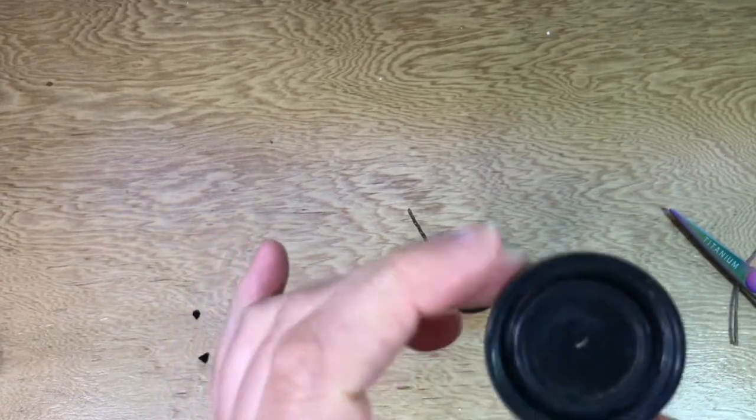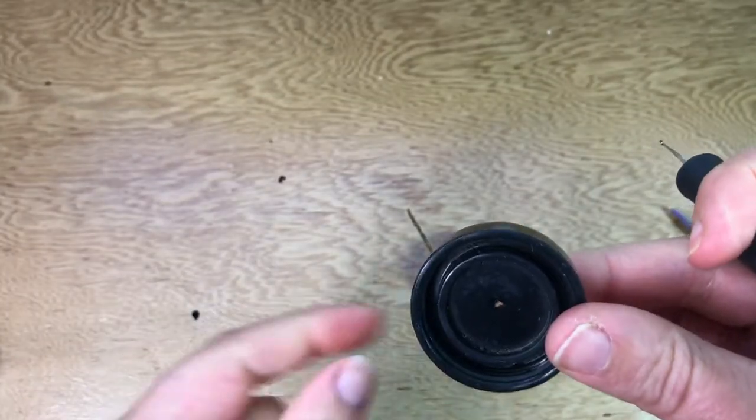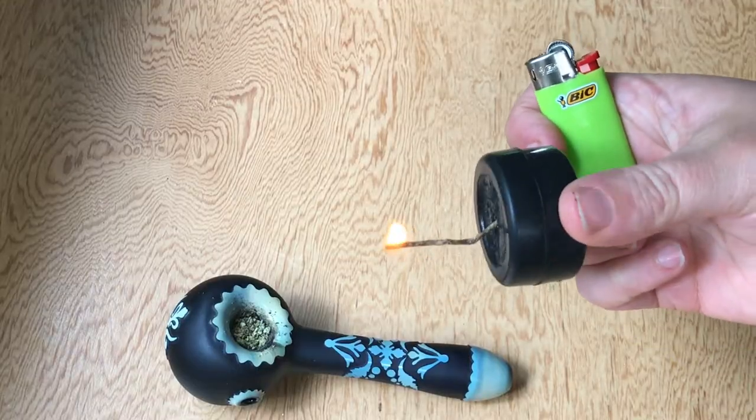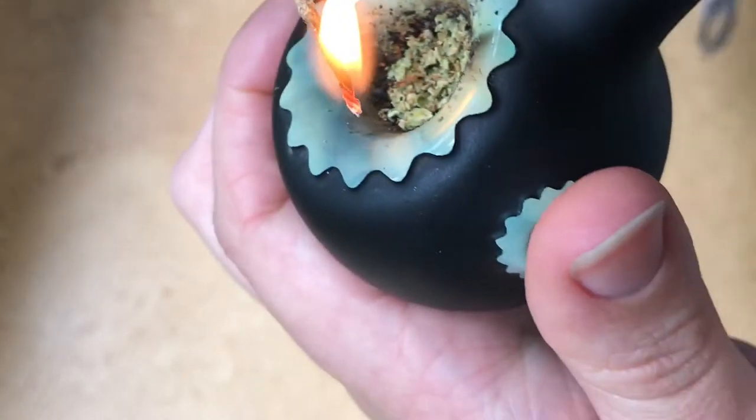Once your hole is cut big enough to fit your hemp wick through it just string it through. And there you have it. A silicone dab container turned into a hemp wick holder.